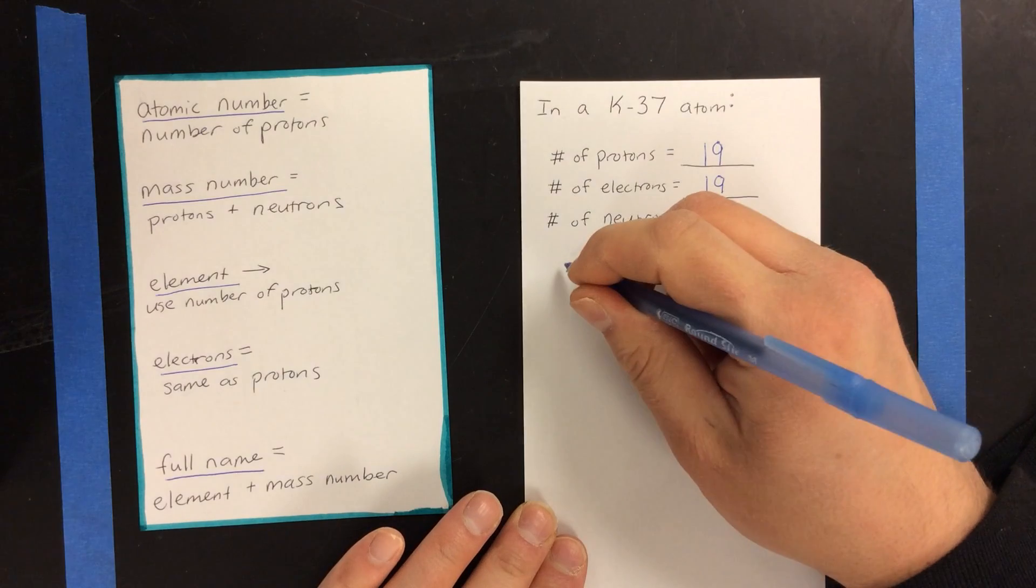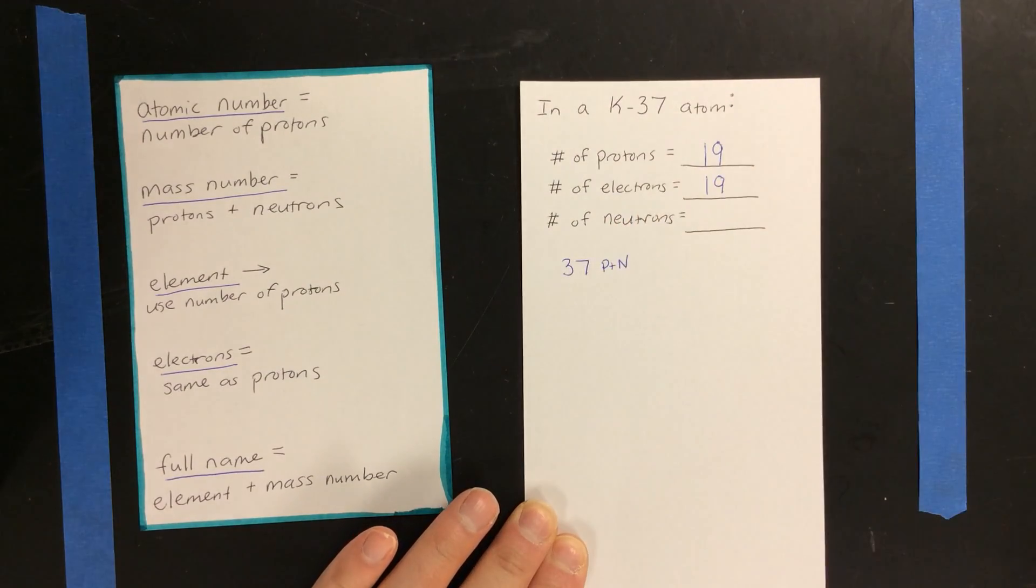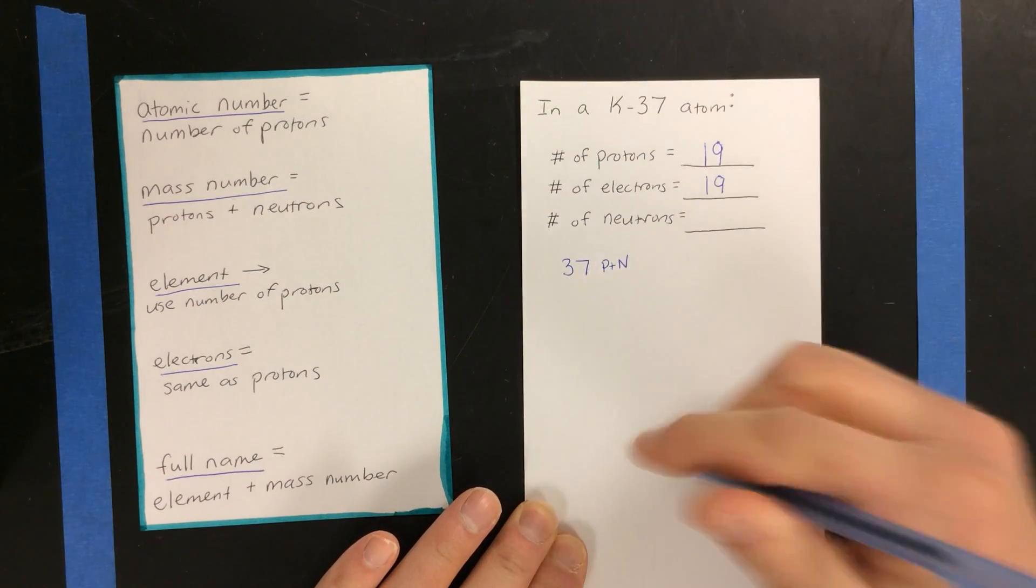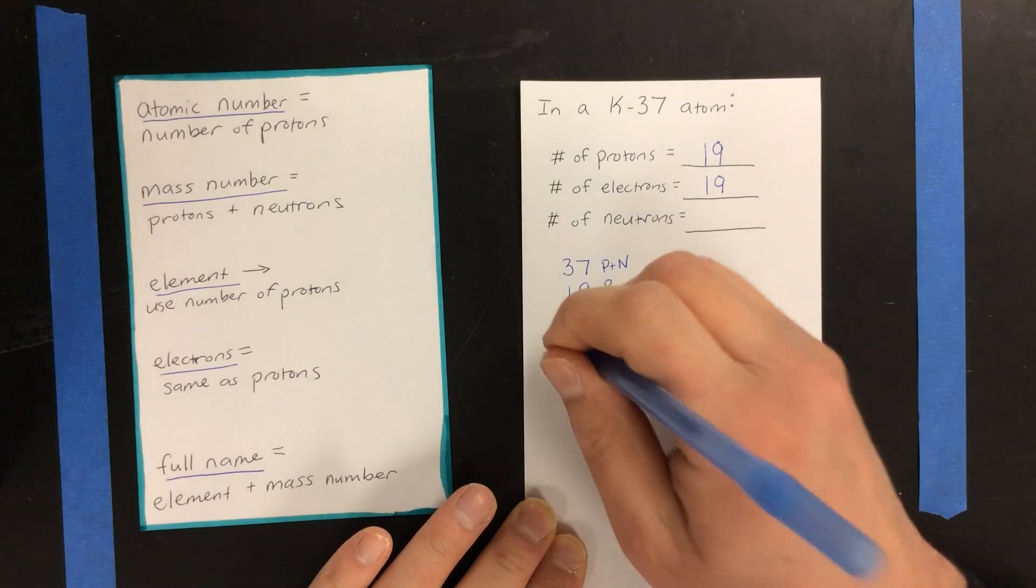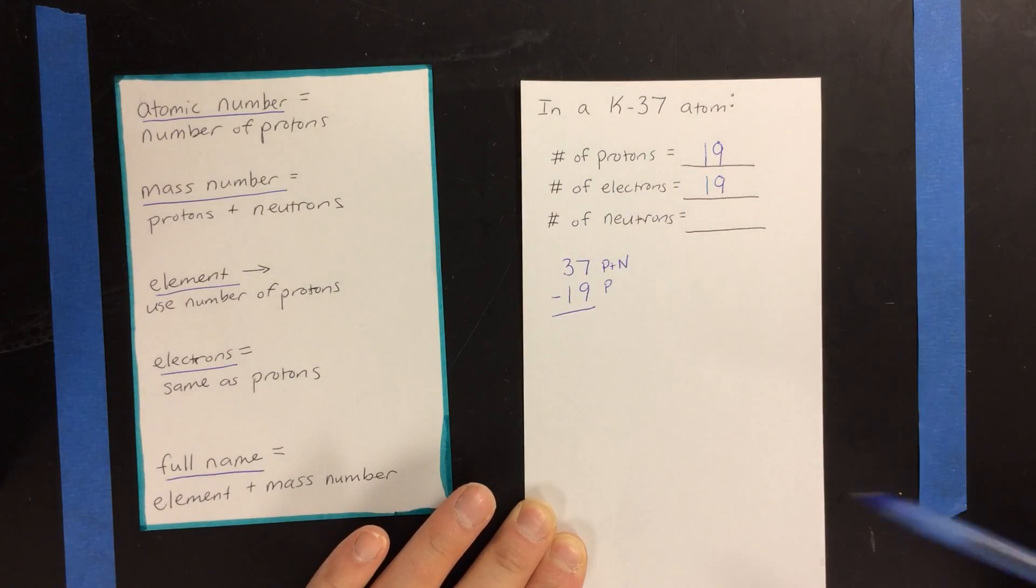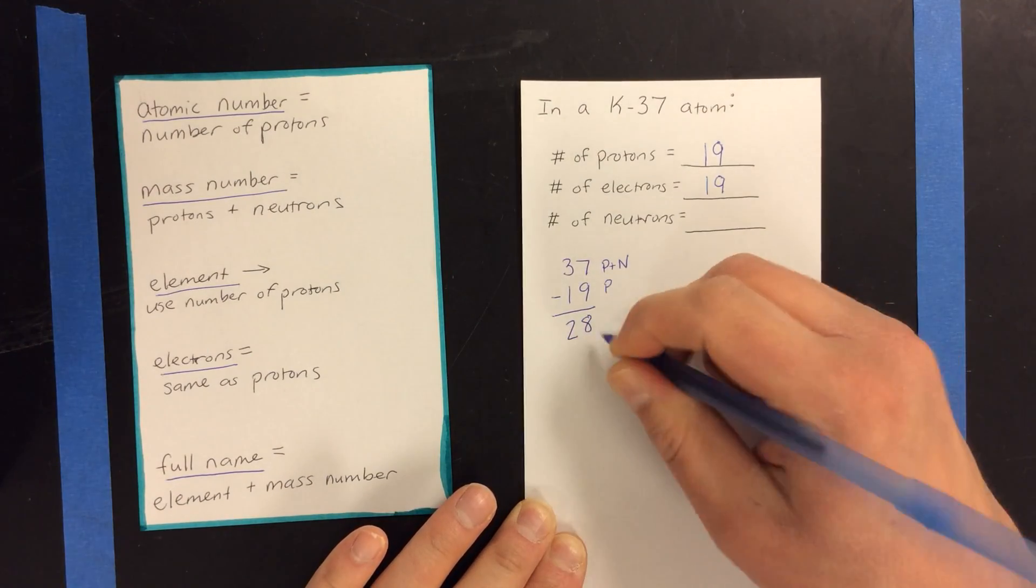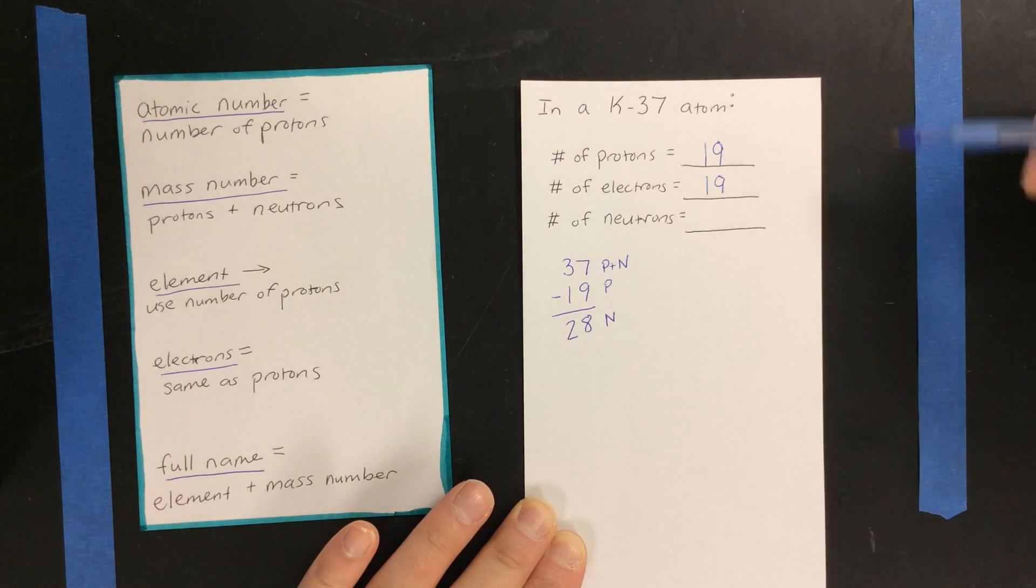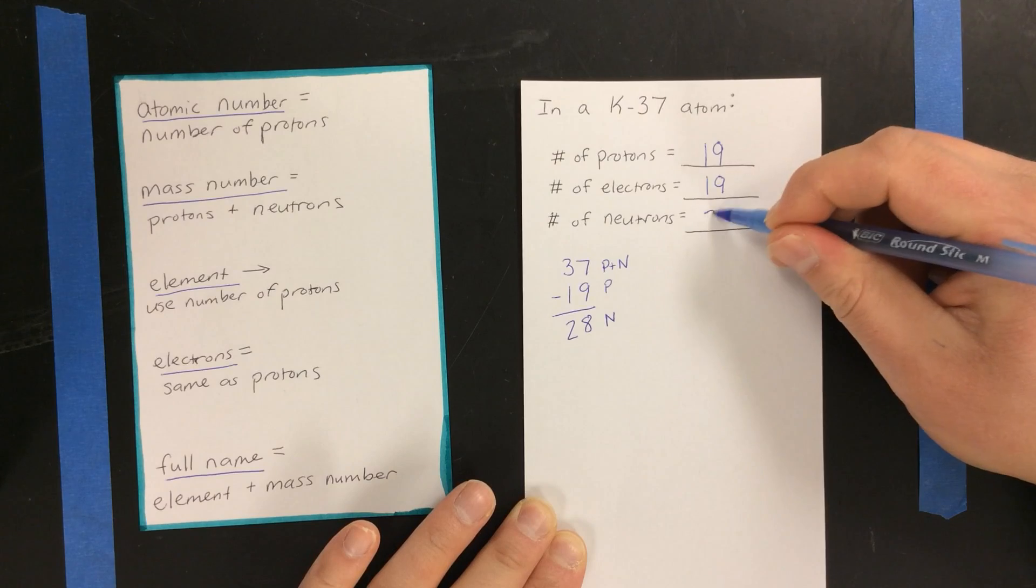Now, we know that there are 37 protons and neutrons all together. Out of those 37, because it's potassium, we know that 19 of those are protons. So how do we find the number of neutrons? We subtract. So if we subtract 19 from 37, we get 28. And that tells us that out of the 37 protons and neutrons, 28 of those must be neutrons.